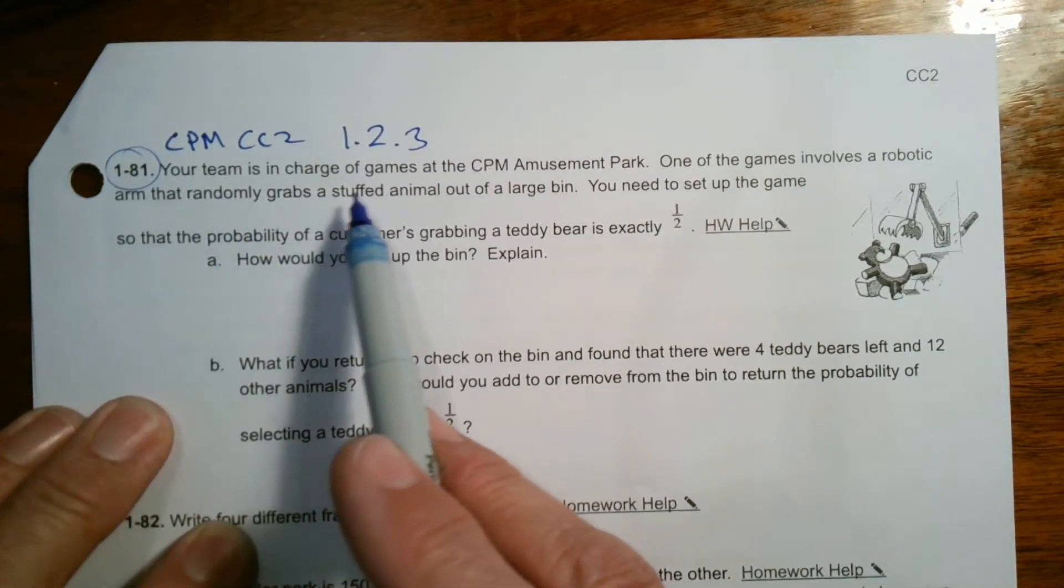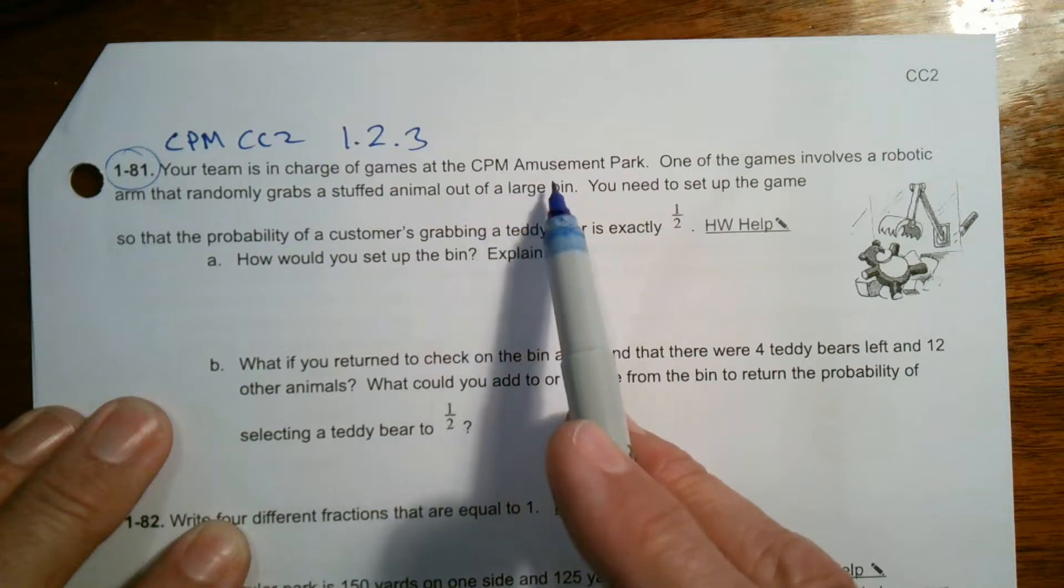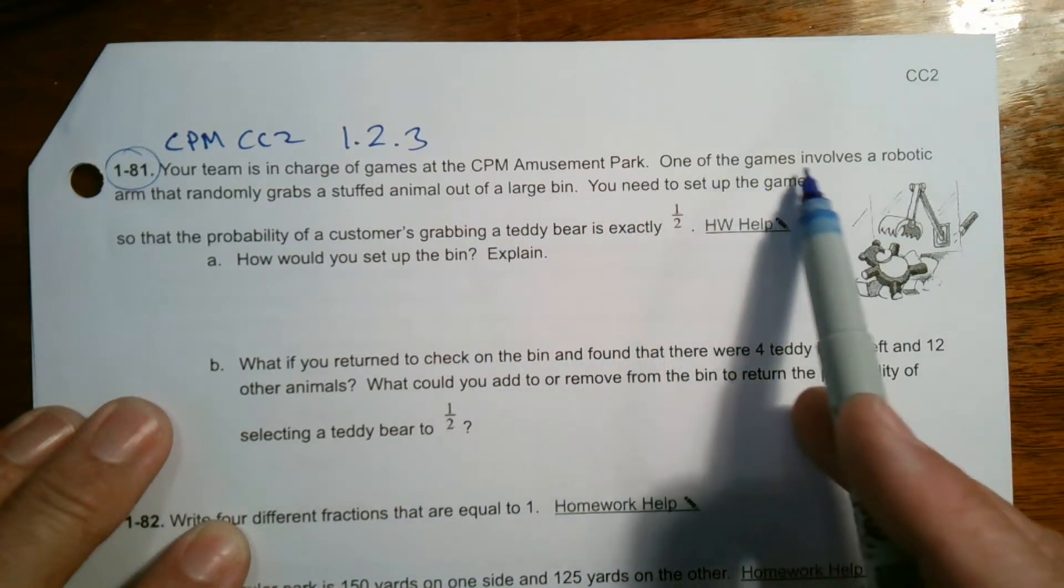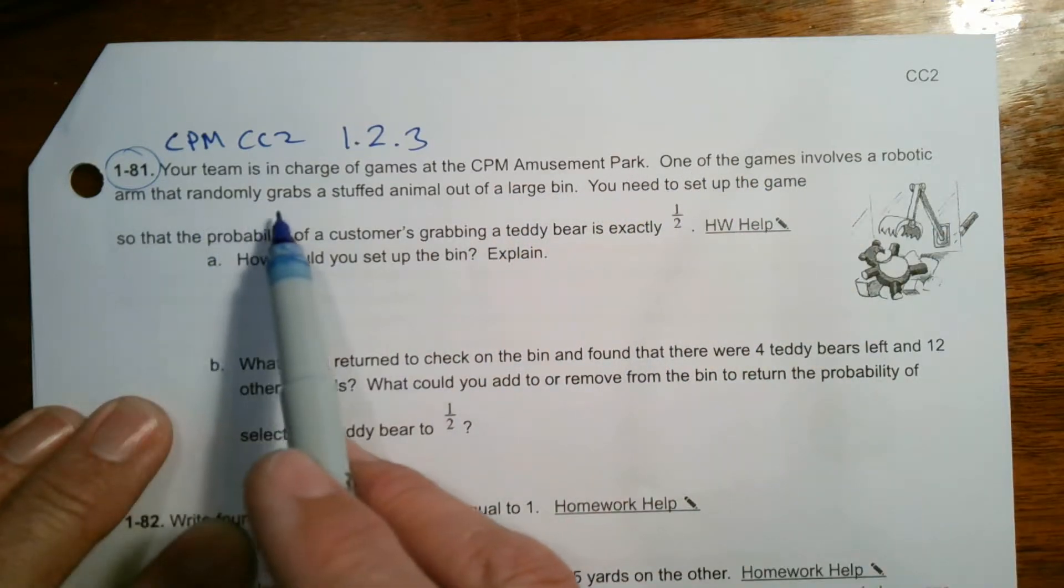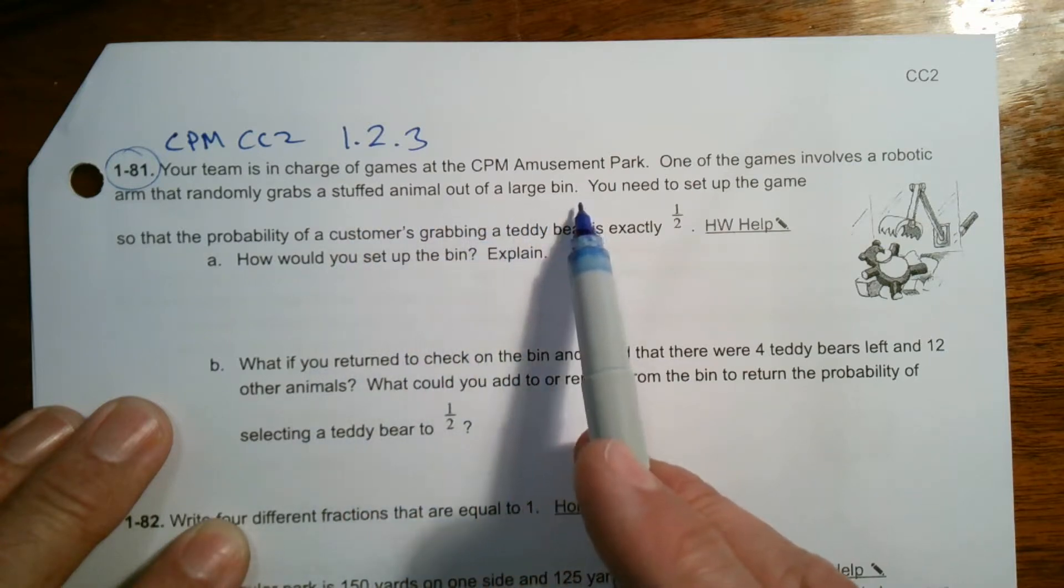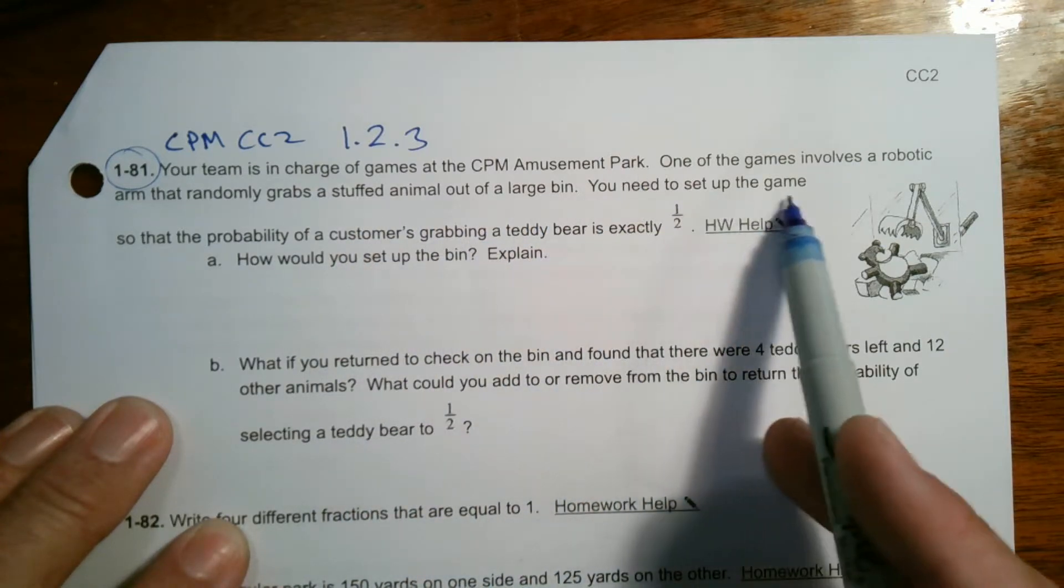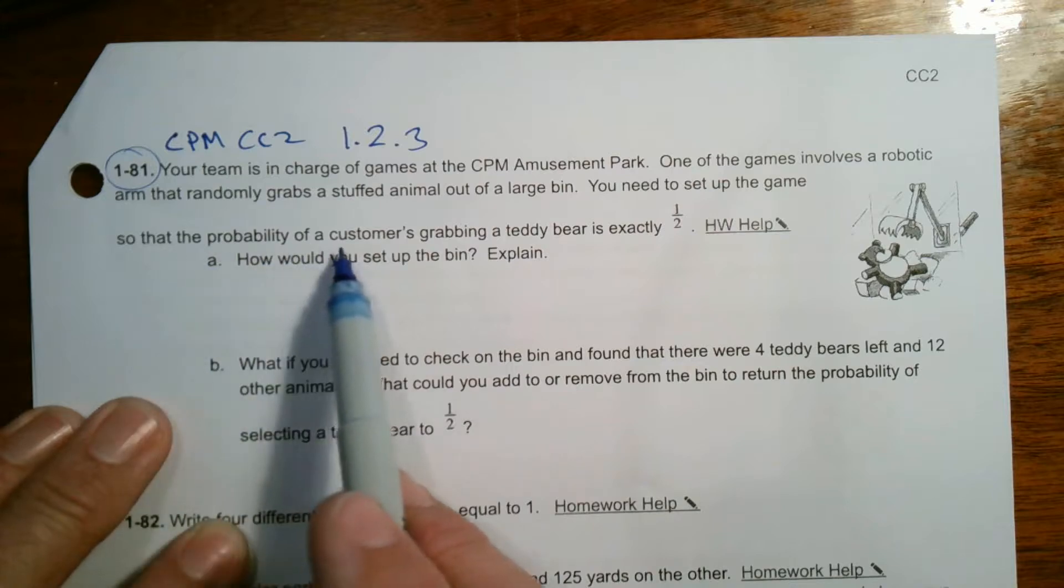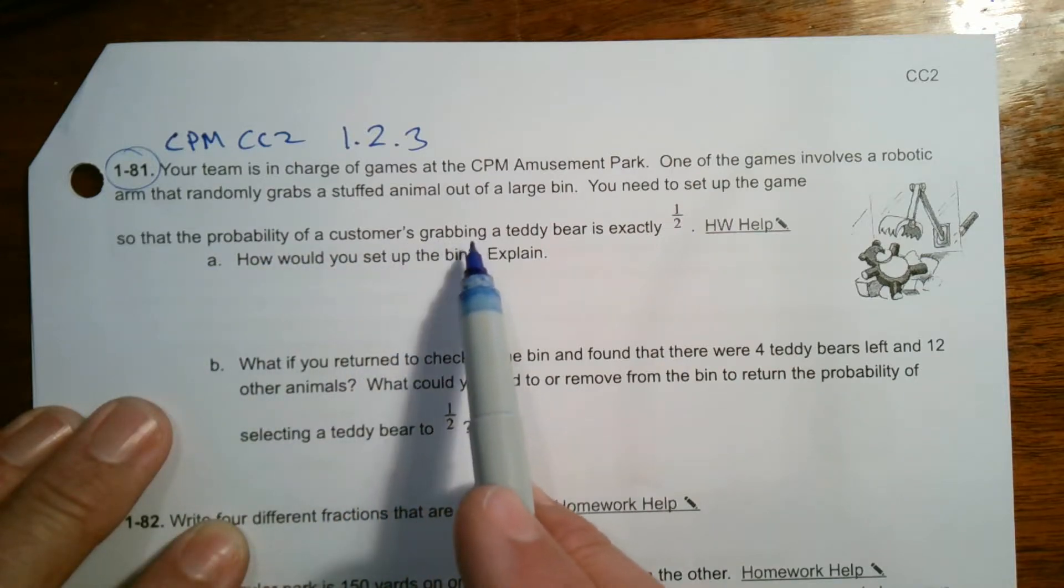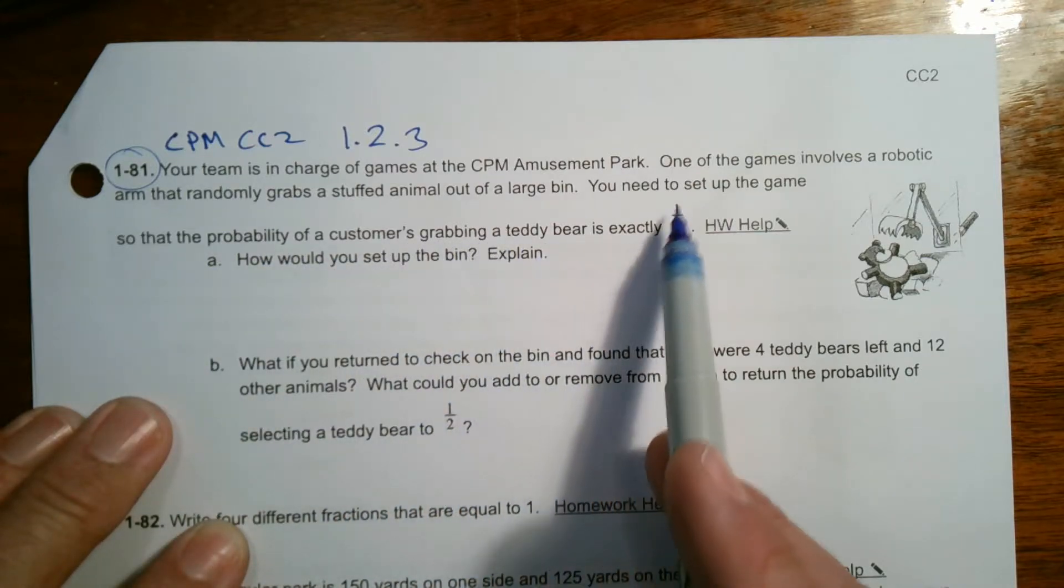Your team is in charge of games at the CPM amusement park. One of the games involves a robotic arm that randomly grabs a stuffed animal out of a large bin. You need to set up the game so that the probability of a customer grabbing a teddy bear is exactly one-half.